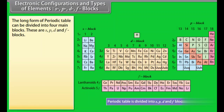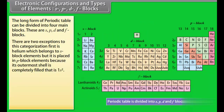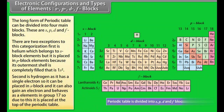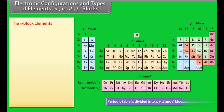Electronic configurations and types of elements — S, P, D, F blocks: The long form of the periodic table can be divided into 4 main blocks: S, P, D, and F blocks. There are 2 exceptions to this categorization. First is helium, which belongs to S block elements but is placed in P block because its outermost shell is completely filled (1s²). Second is hydrogen — as it has a single electron, it can be placed in S block, but it can also gain an electron and behave as a group 17 element, so it is placed at the top of the periodic table.